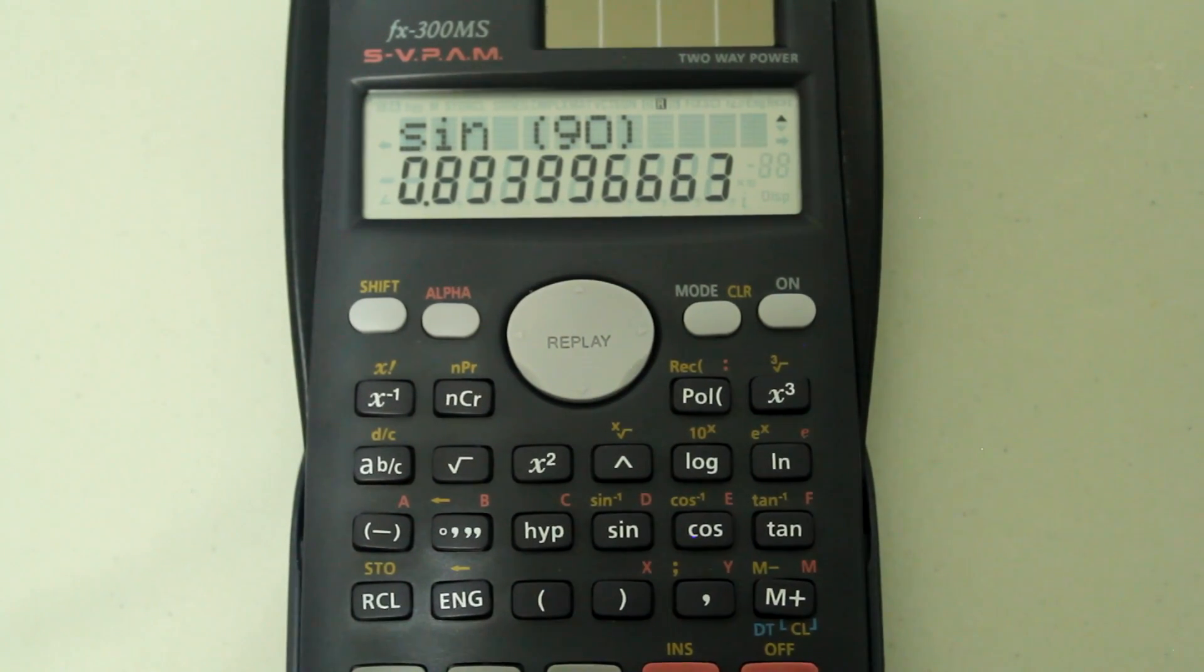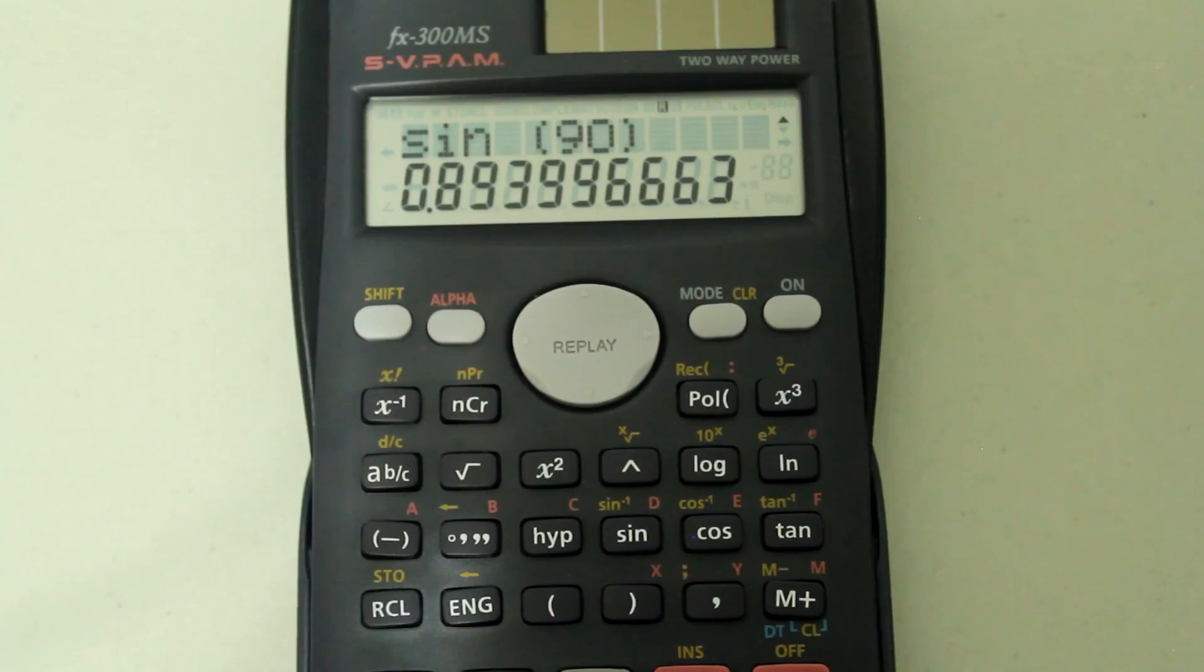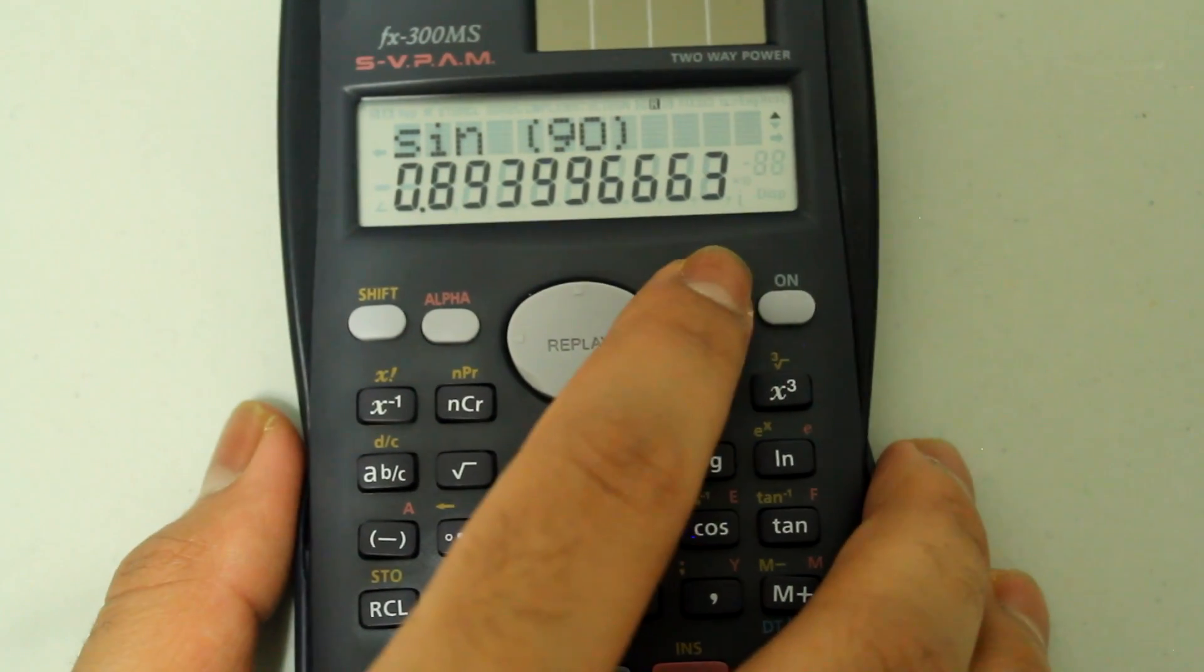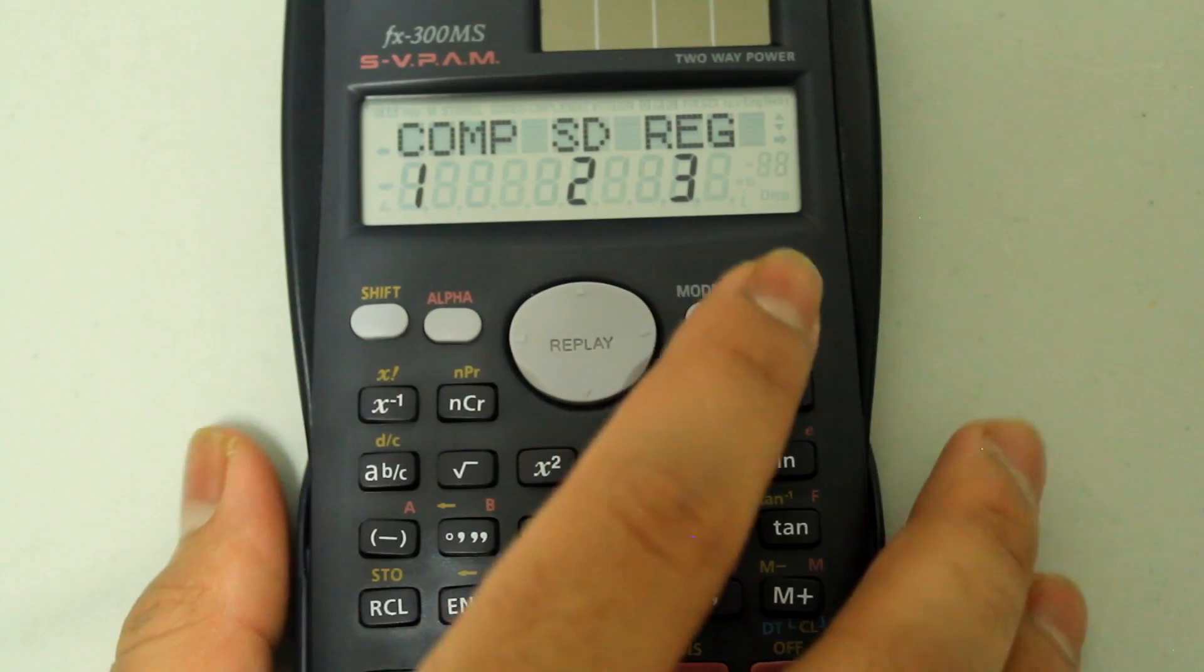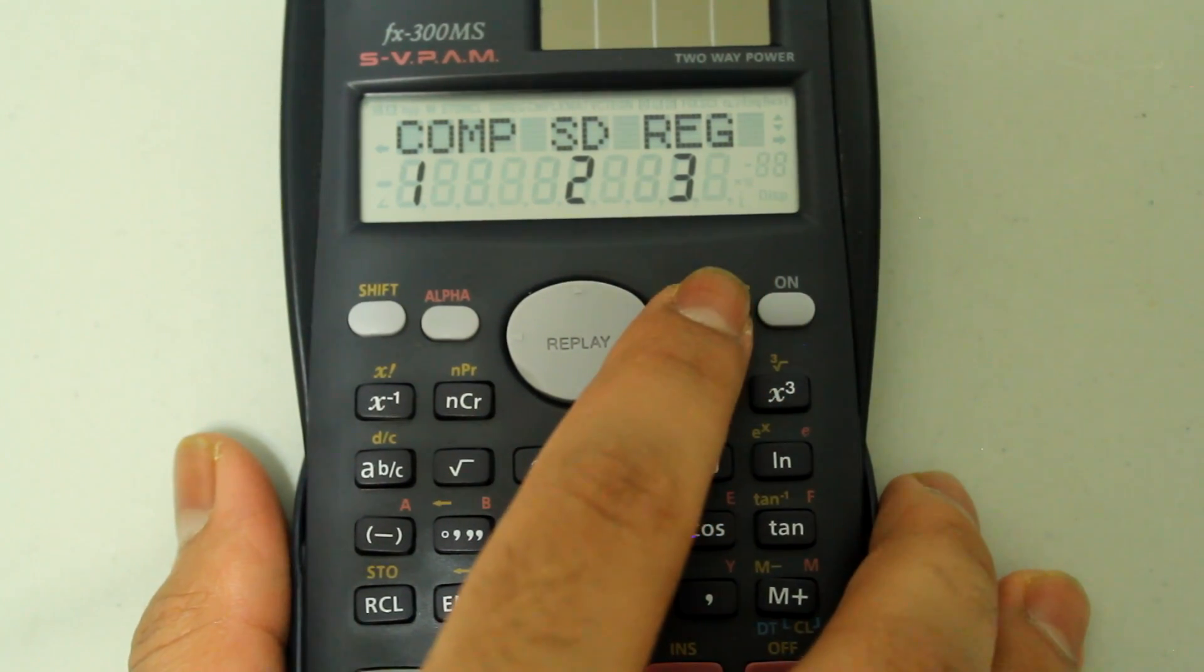That brings up a few options. Press the mode button again, and now you can choose between degrees, radians, and grads.